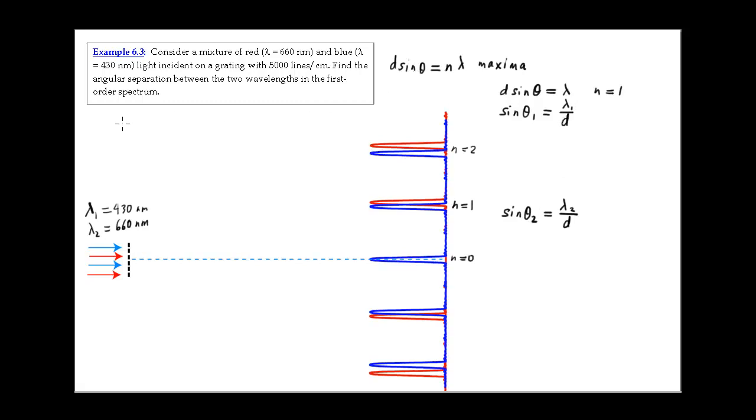Ah, we're not given d, are we? What we're given is n. n is the number of lines per unit length. And in this problem, n is 5,000 lines per centimeter. So you might say that this is the density of lines, how many lines per centimeter there are.